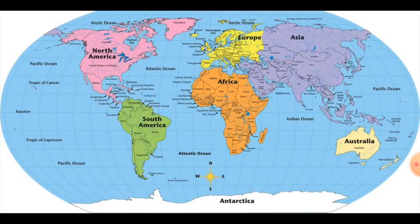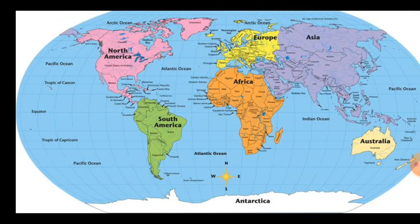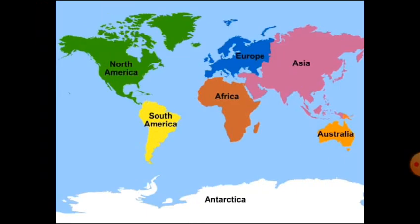There are two main divisions of the earth's surface. The large land masses are called continents and the huge water bodies are called ocean basins. There are seven major continents, and they are separated by large water bodies.